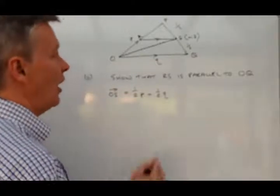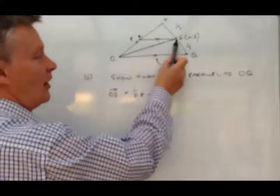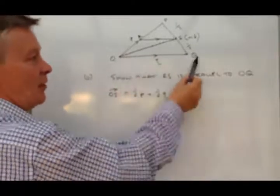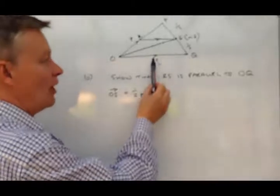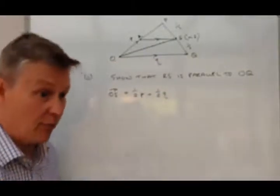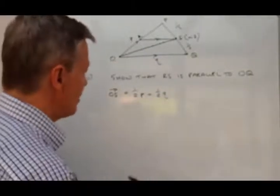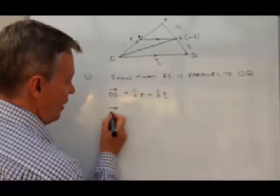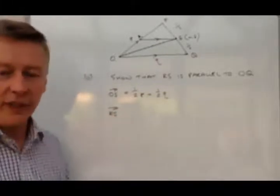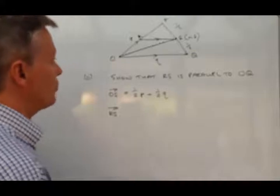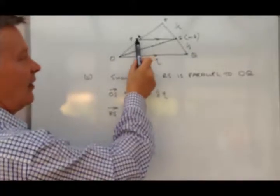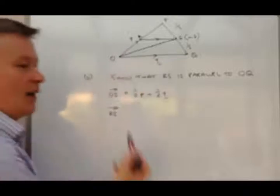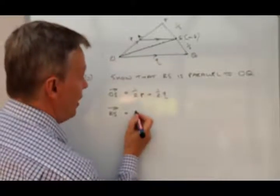So in this particular case, we've got RS. Now if it's parallel to OQ, then it must be a multiple of vector Q. And we need to prove that. Okay, so let's look at vector RS. Alright, well if we want to get from vector RS, we know that we're here. Now at that point here, we're looking at RO.